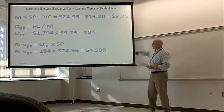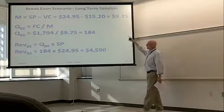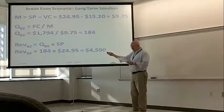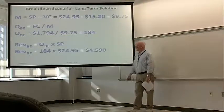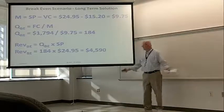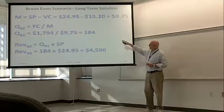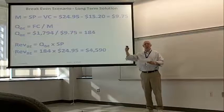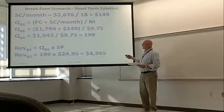So, long-term solution, the margin is $9.75. The break-even quantity, those fixed costs, $17.94 divided by the margin, 184 is our break-even quantity. Break-even revenue, $4,590. Is that a reasonable number? Okay, go back and check that market research. How much people are willing to pay and how many of them are willing to pay that.